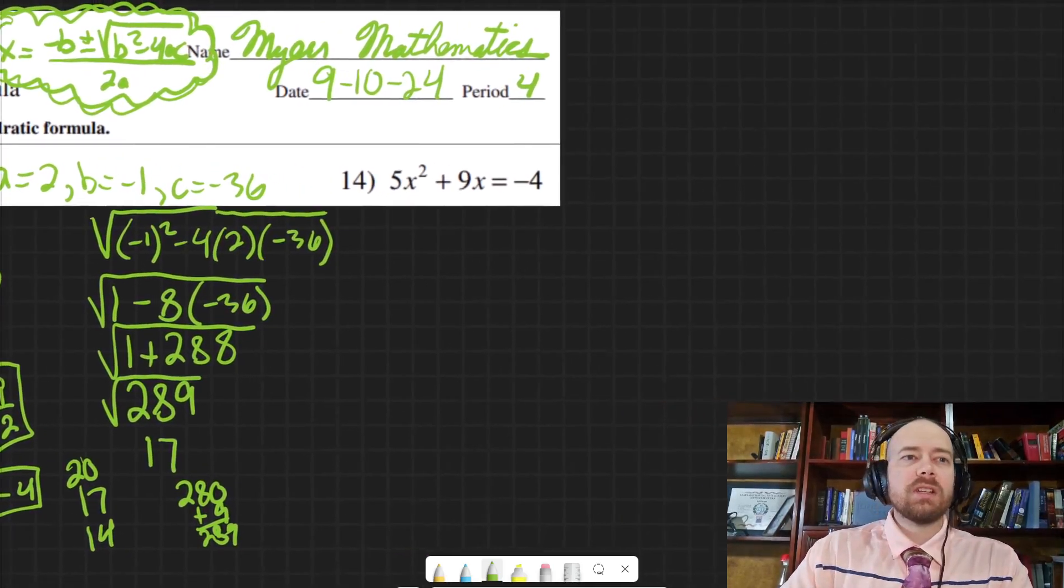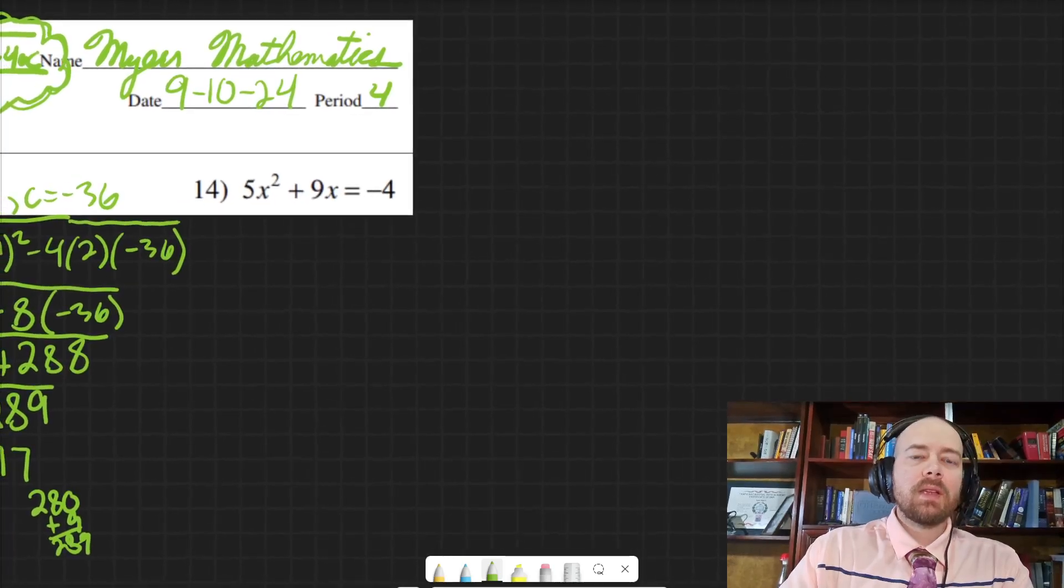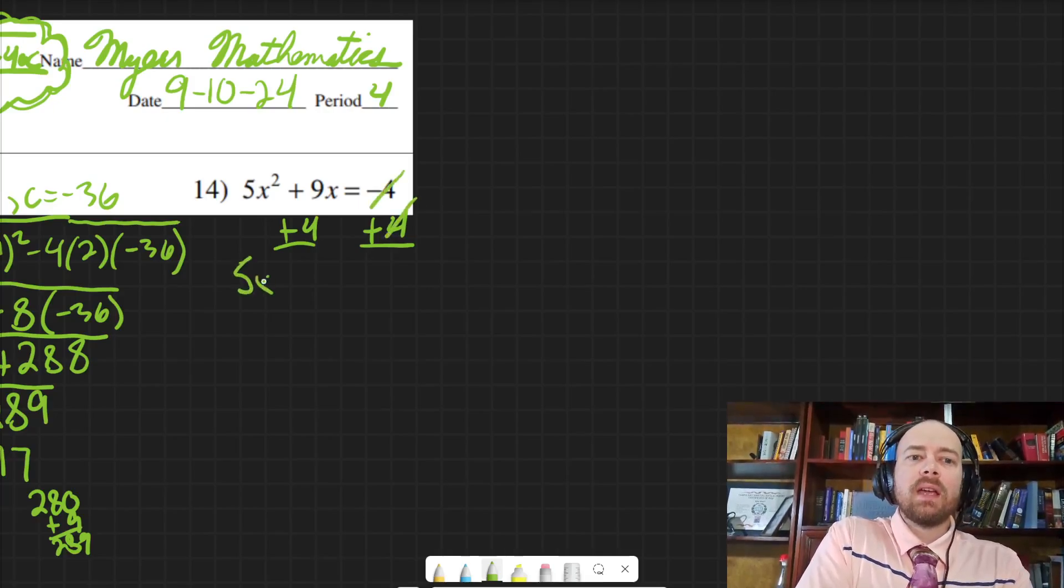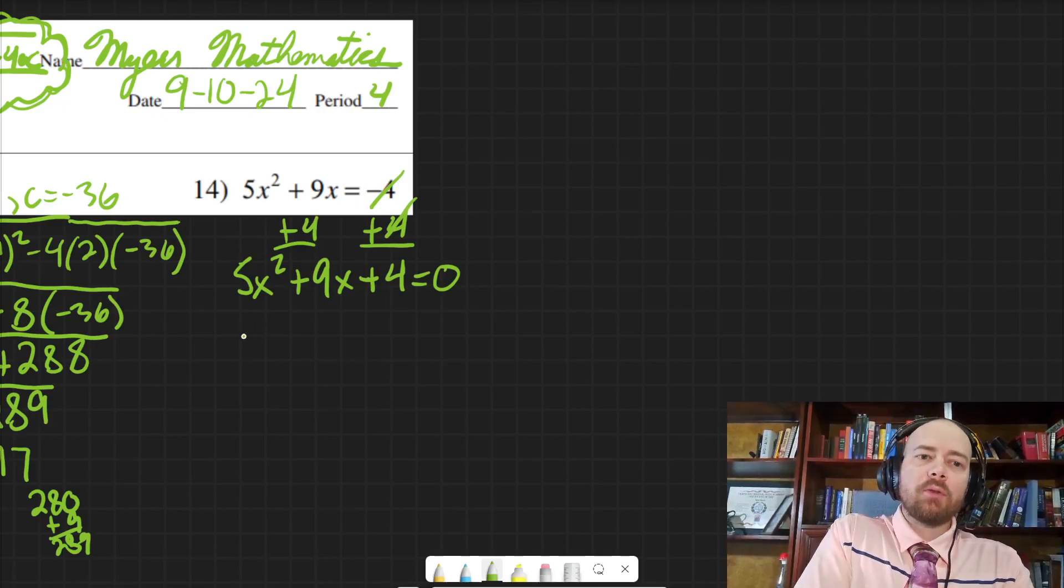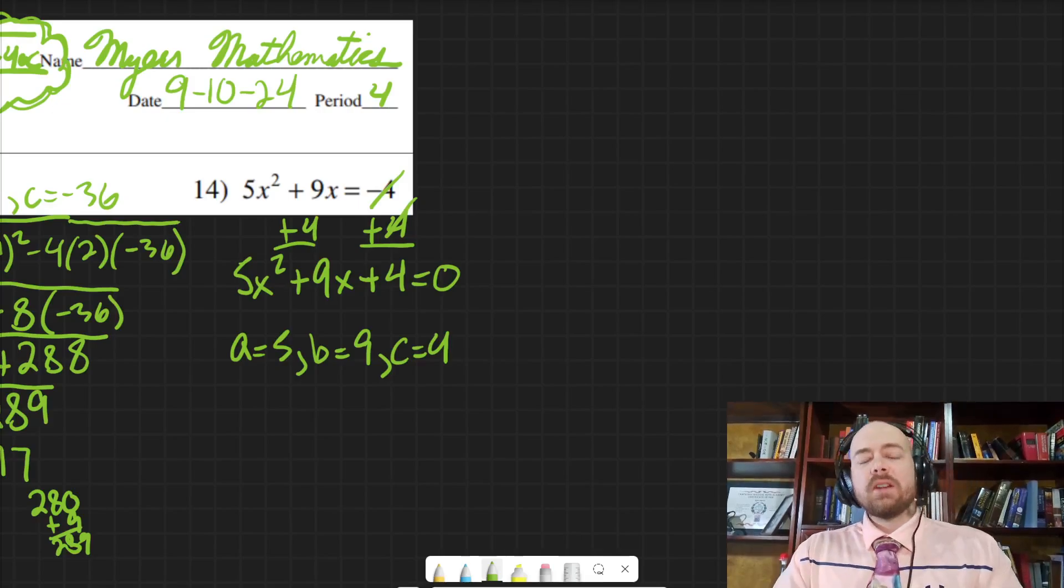All right. Let's go ahead and shift over to 14 now. So we run into the same issue as 13. We need to get everything on one side. And the only time you don't want to do that is if you're factoring by completing the square. And then you would actually leave the constant on the other side. But we're not doing that. So we are going to get everything equal to zero. I think I'm going to go ahead and just identify the a, b, and c here. So 5, 9, and 4.